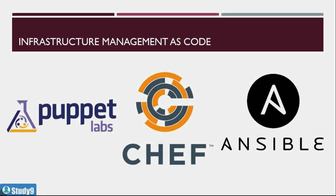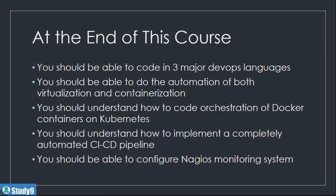In Ansible, you will learn how to create a vault, which is a secure way to store passwords. So that's a very good coverage of all the tools we are going to cover in this training. By the end of this course, you should be able to code in three major coding languages and be able to do automation of both virtualization and containerization. We will learn how to create Dockerfiles and how to create Kubernetes YAML coding, as well as how to create pods and deployment configurations.